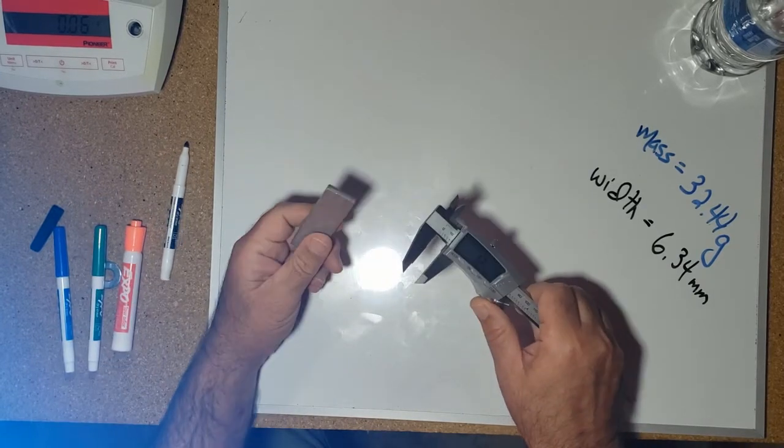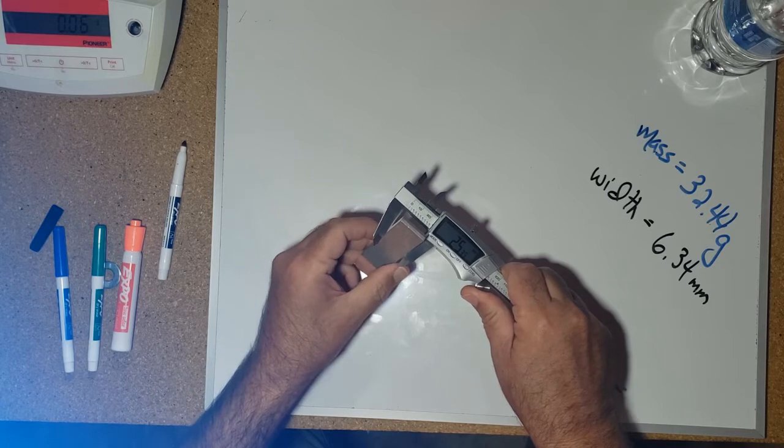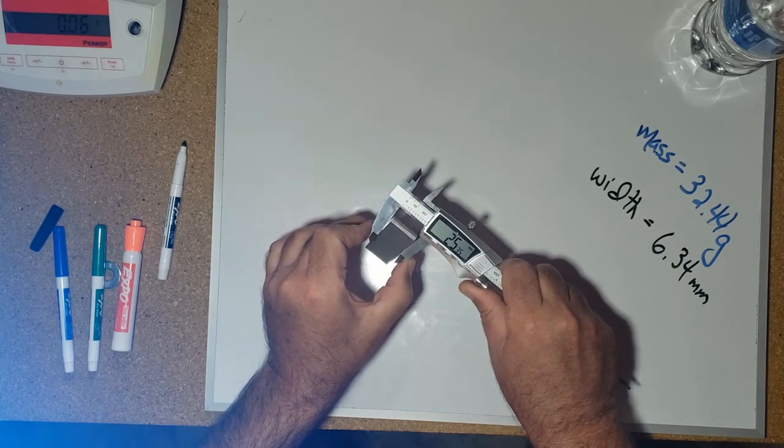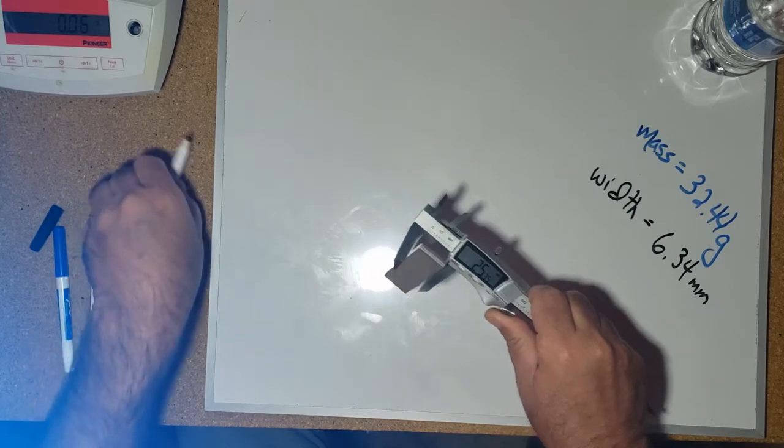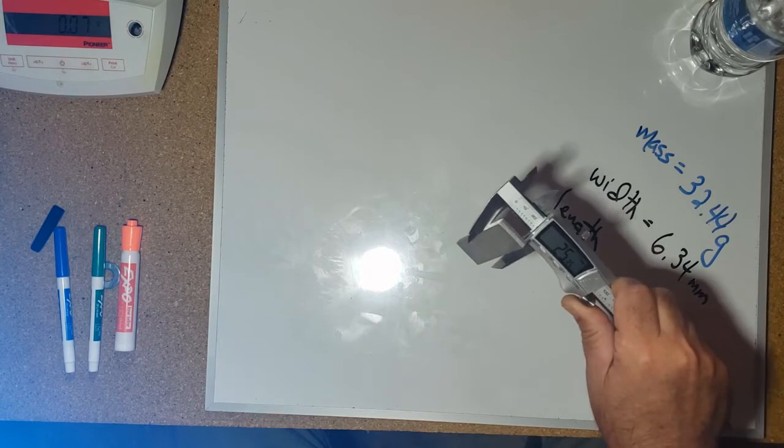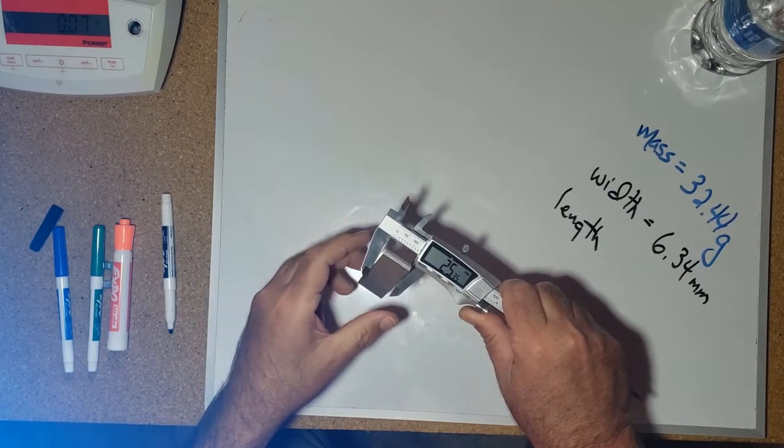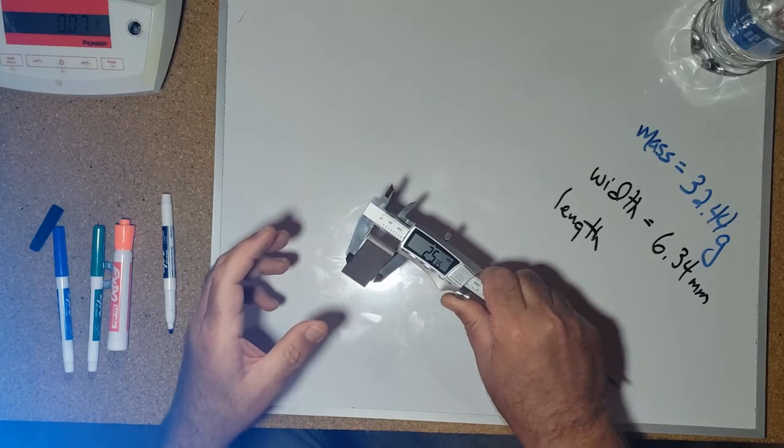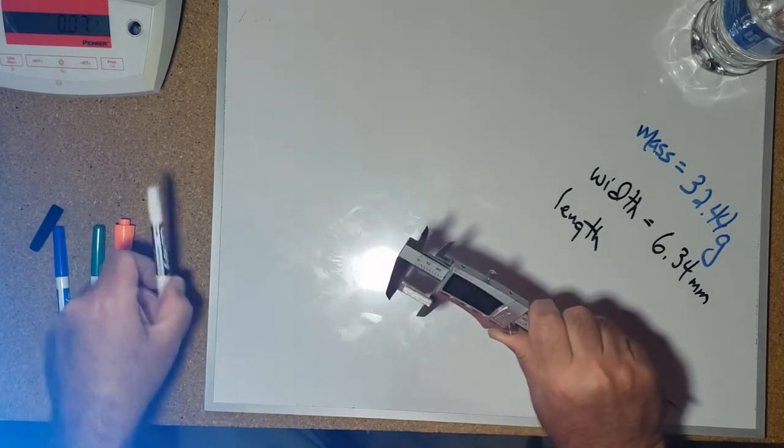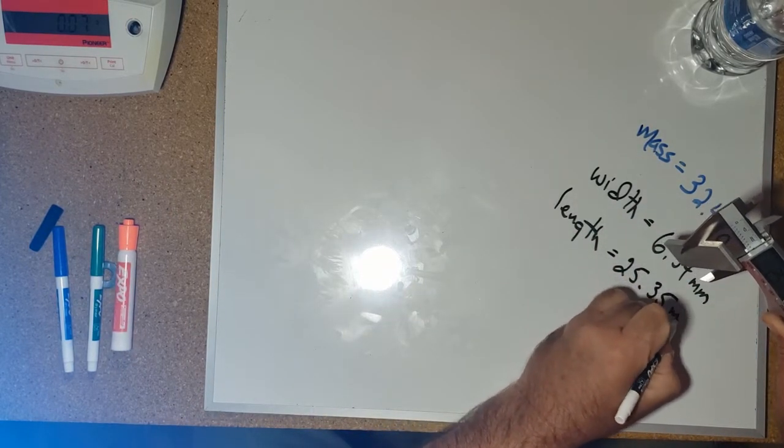Let's go with this other dimension right here, the second biggest one. We'll call this the length, maybe. It really doesn't matter. When we multiply length times width times height, it doesn't matter what order we multiply in, because multiplication is commutative. The length is 25.35, 25.35 millimeters.